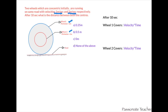After 10 seconds, wheel 1 will cover the distance equal to velocity into time, which is 1 meter per second into 10 seconds, and that will be equal to 10 meters.